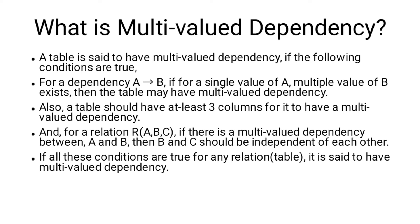One single value of A and multiple B values exist in the same way — there is a multi-value dependency. If there is one condition, there are at least three columns. If there is another condition, there is a multi-value dependency between A and B, and B and C are independent.